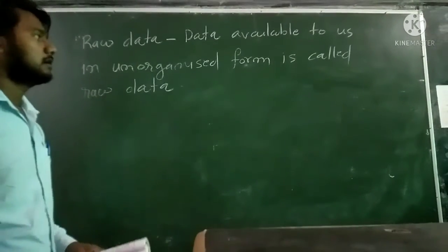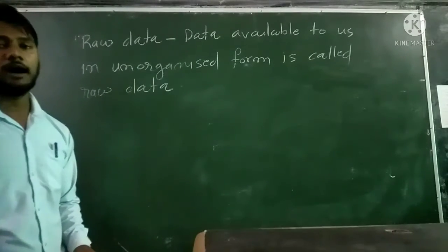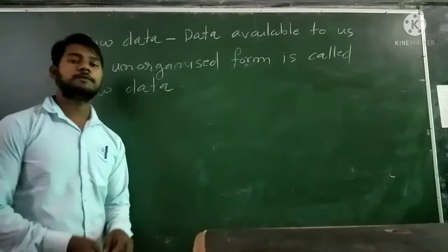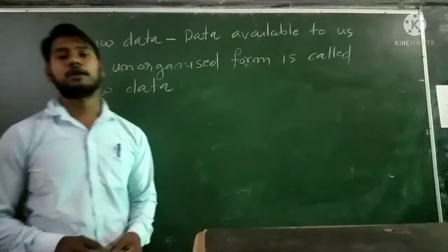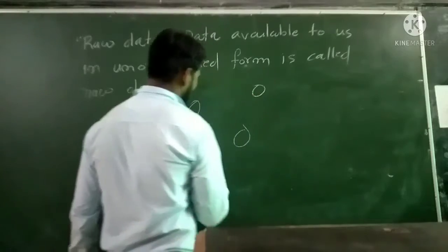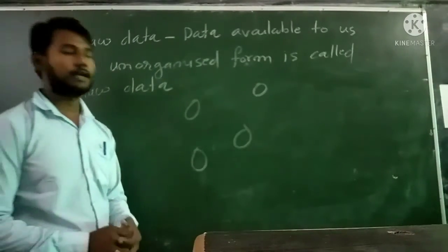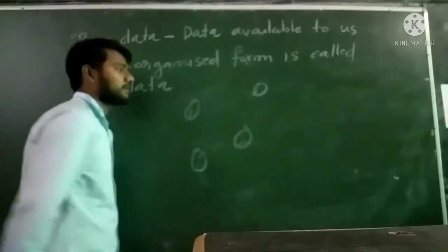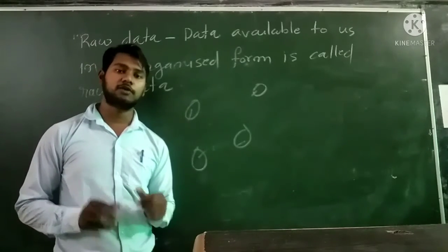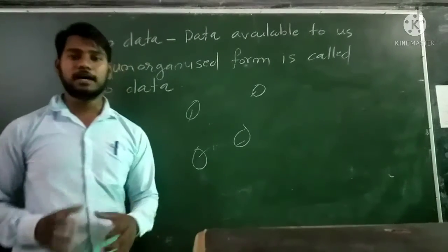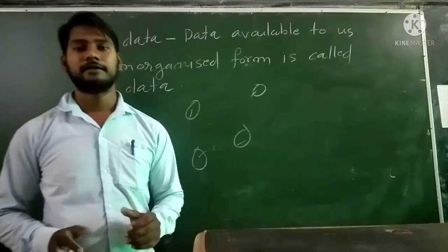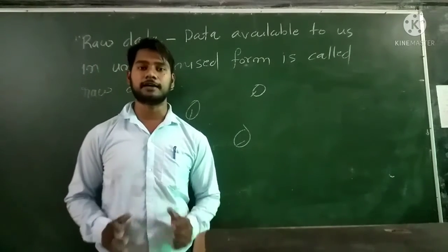Raw data kisko kehte hain? Data available to us in an unorganized form is called raw data. Jo bhi information hogi, woh sahi pattern mein nahi di hogi. We have to organize this form — that is raw data.